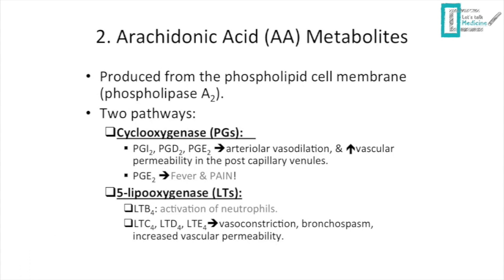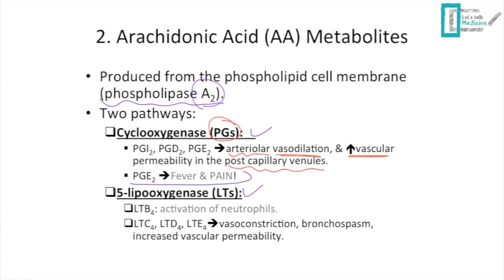The second mediator is arachidonic acid metabolites, derived from the phospholipid cell membrane via phospholipase A2. This produces two pathways: the cyclooxygenase pathway yields prostaglandins (PGI2, PGD2, PGE2), which cause arteriolar vasodilation and increased vascular permeability — specifically at post-capillary venules. Prostaglandin E2 is responsible for fever and pain.